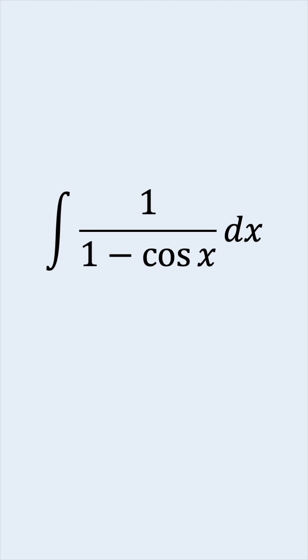How do we integrate 1 over 1 minus cosine x? Stick around till the end, because there's going to be a challenge question for you.